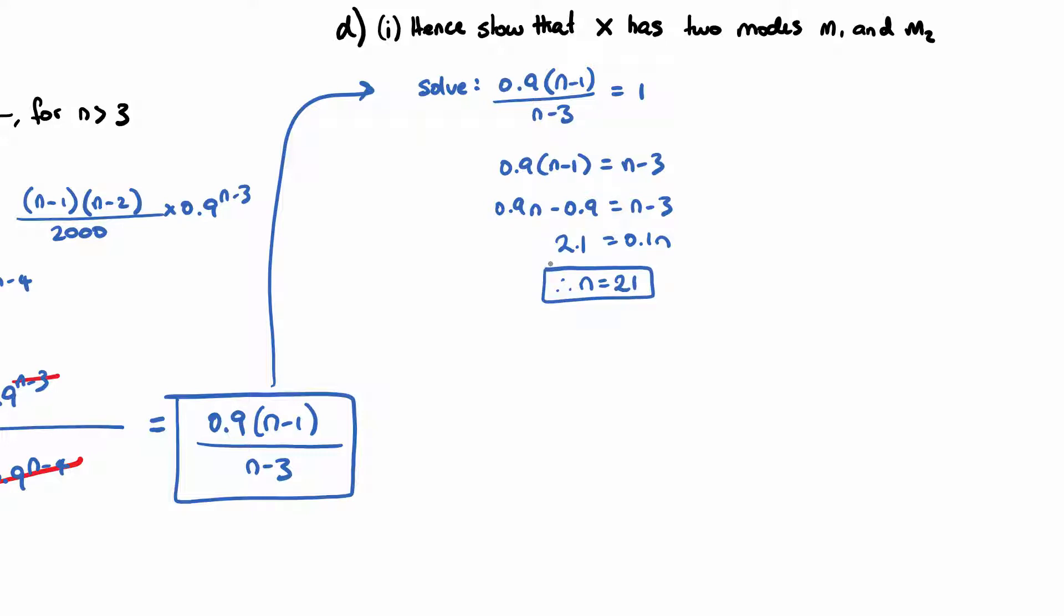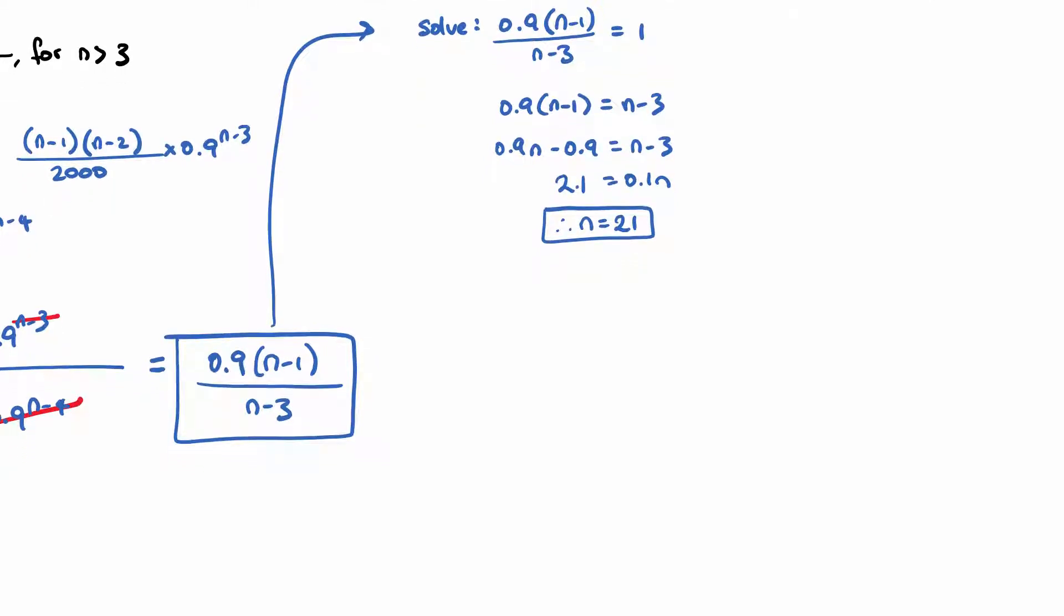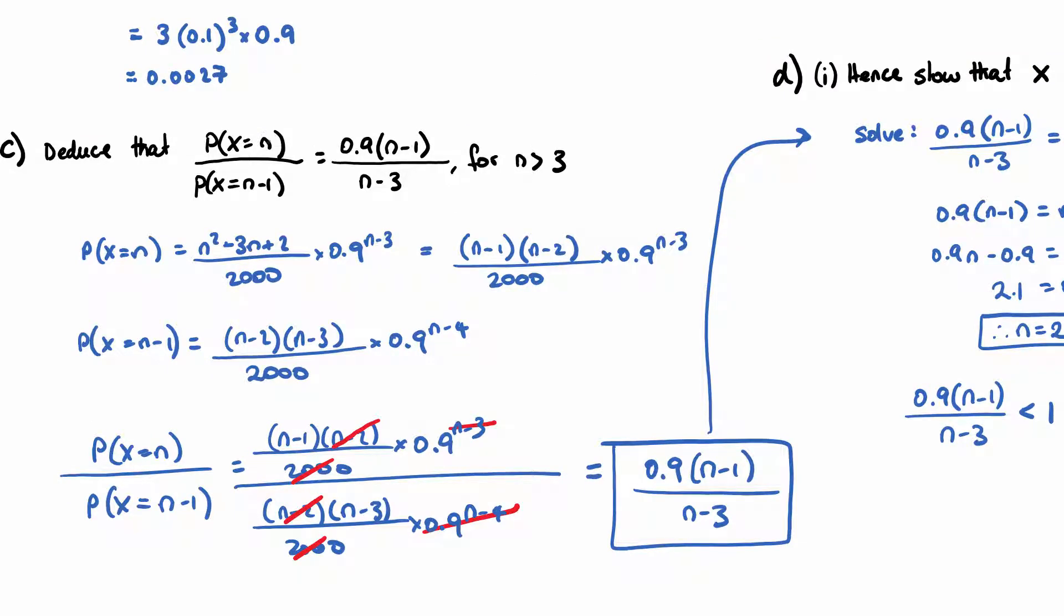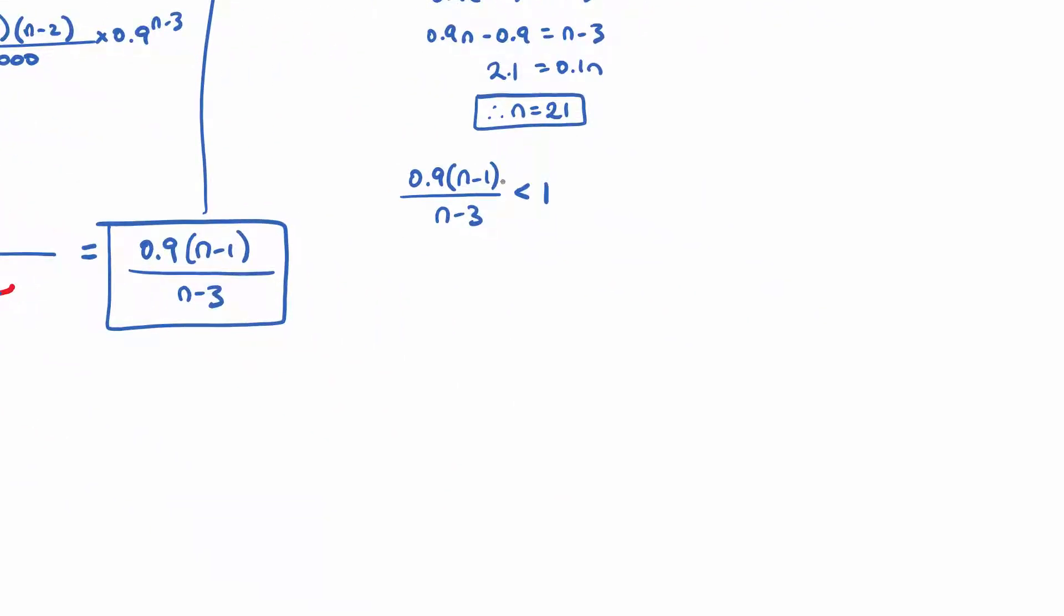Okay, so what we want to then go on and check is when this equation here, 0.9(N-1) over N-3. So if this here is less than 1, let's think about what happens here. If this here is less than 1, that means that the numerator would be smaller than the denominator. So the probability of such value of N would be less than the one before it.